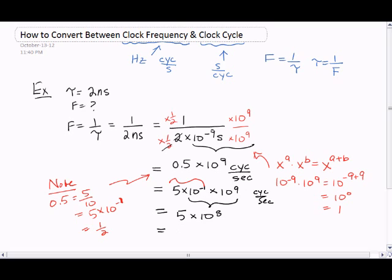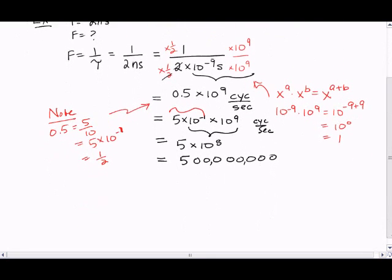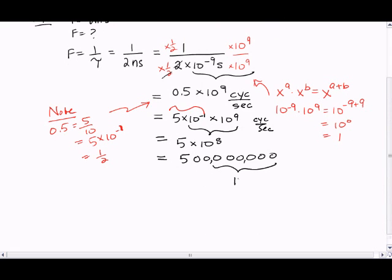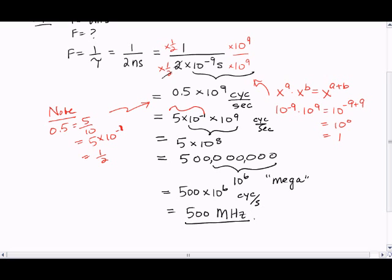So now that we have that, we can use law of exponents again to get 10 to the 8 from here. So let's expand this out. That's 5 with 8 zeros at the end: 1, 2, 3, 4, 5, 6, 7, 8. Let's put our commas in. So notice here that these 6 zeros, 10 to the 6, is mega. And so we have 500 times 10 to the 6 cycles per second, or 500 megahertz. And this is the final answer, which I will underline and put two strokes here. As a general practice, you should always indicate what your final answer is with a box or some sort of line underneath.